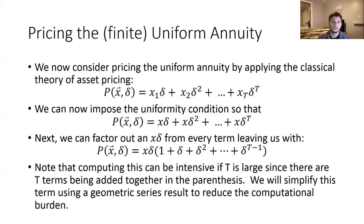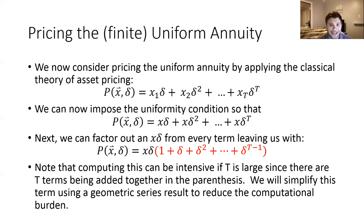Note that computing the formula in this particular form can be a little intense. If T is very big — like if you're dealing with 360 mortgage payments — then in the parentheses you would have 360 terms to add up. On a test, doing that with a calculator would be very cumbersome. So we're going to spend a little time going through a hiatus on how to simplify this term in red in a way that makes it more compact in terms of computational efficiency. This will also make it more accessible to relate the pricing function for a uniform annuity to other pricing functions we'll look at moving forward.